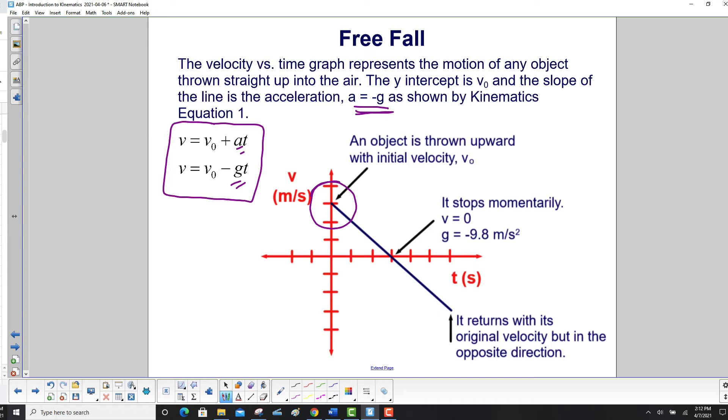And let's just go through the story here. You start off at a high velocity. It starts decreasing until you get to the top. And at the top, you have a velocity of zero, but you still have g equals negative 9.8. It's on the same line with the same slope. Then finally, it returns to the ground with its original velocity, the original magnitude of velocity, in the opposite direction.